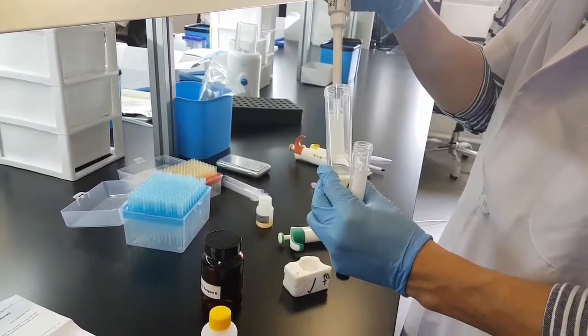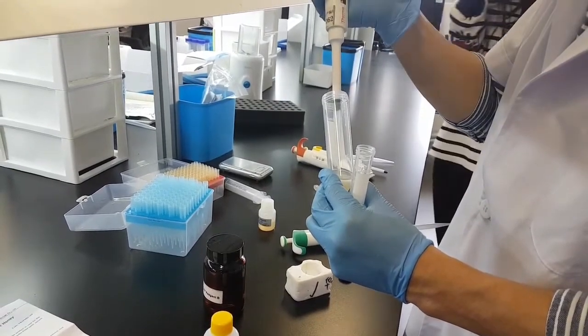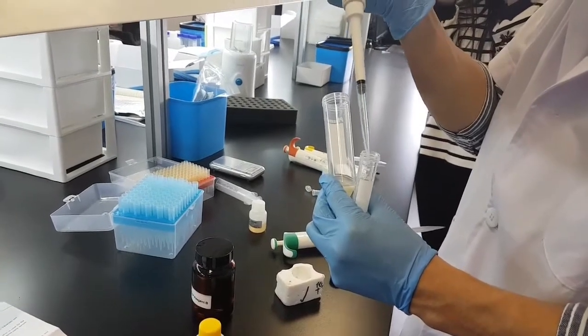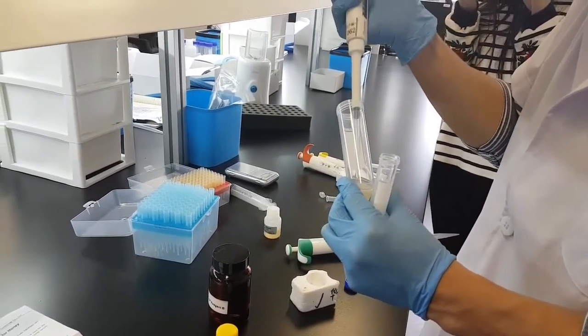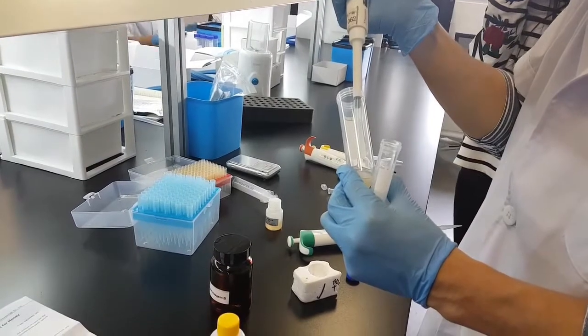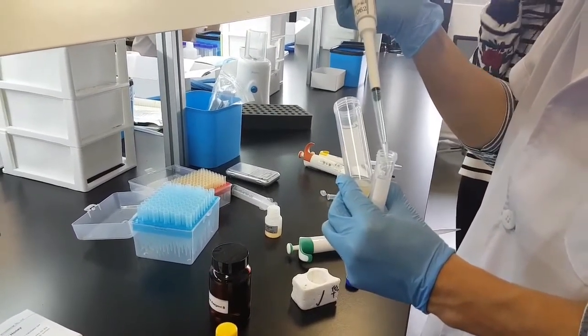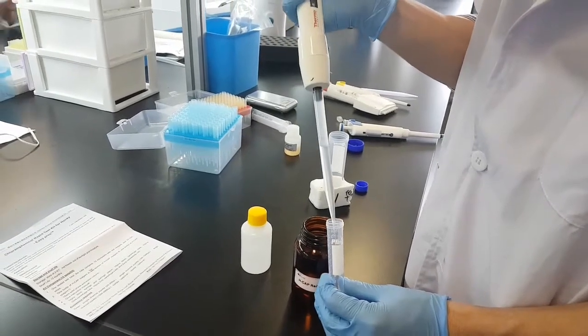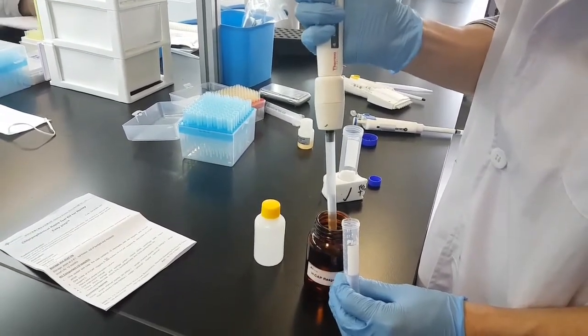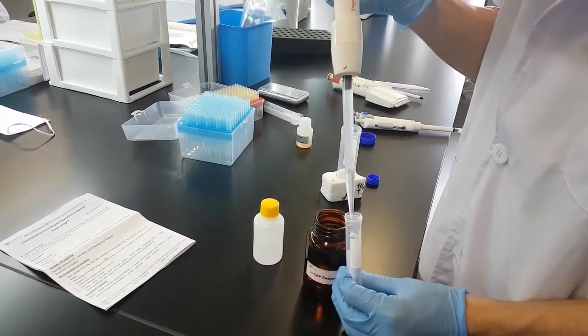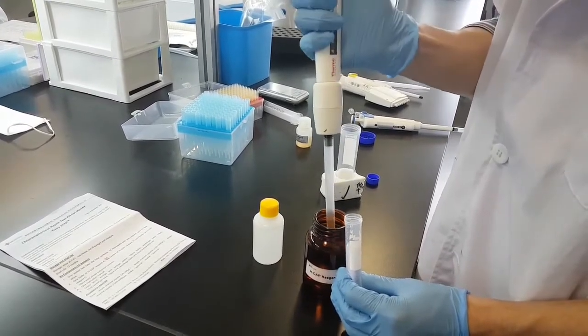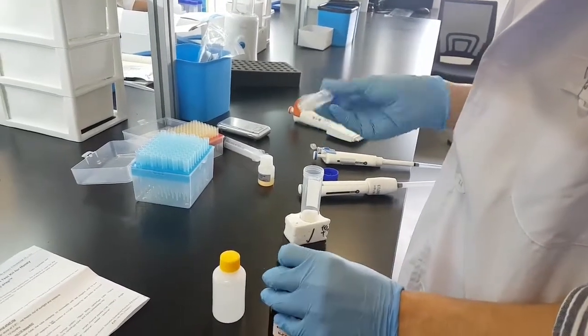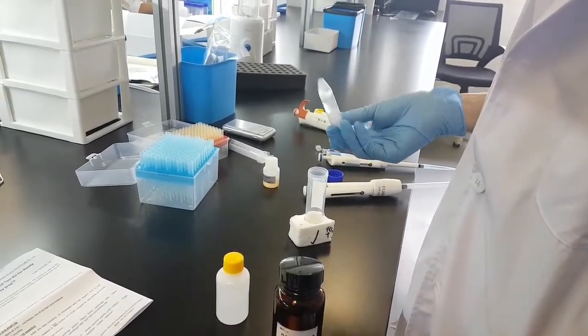After having it in a standing position for one or two minutes, we will take three milliliters of supernatant and input it into the centrifuge tube of reagent B. We will take 12 milliliters, mix up and down for four or five times, and keep in a standing position for about a minute.